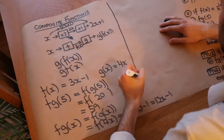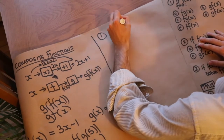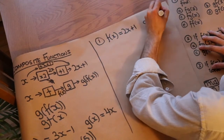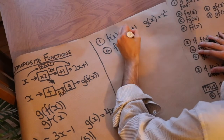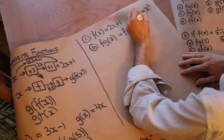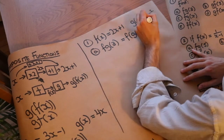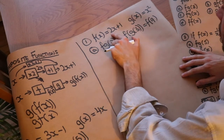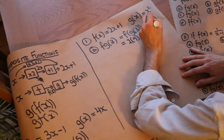Let's do more examples. We have f(x) = 2x + 1 and g(x) = x². We want to find f(g(3)). First, g(3) = 3² = 9. Then f(9) = 2 times 9 plus 1 = 18 plus 1, which is 19.